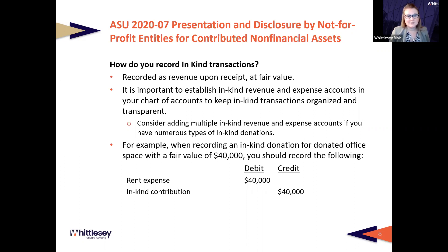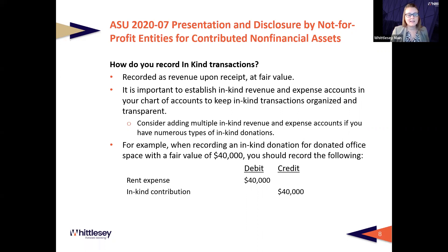Let's talk about journal entries. Let's say you're recording an in-kind donation for free use of office space, and the fair value if you were actually paying for that office space is $40,000. In this case, you would record a debit to rent expense for $40,000 and you would credit in-kind contribution revenue for $40,000. If you have other kinds of donated services — say legal services — then you would debit legal expense in that case.